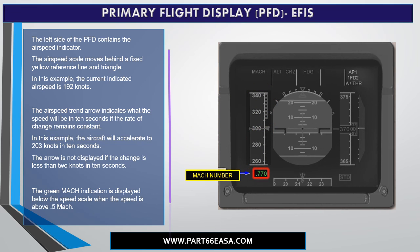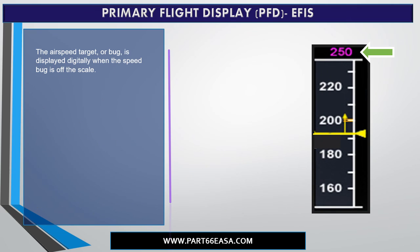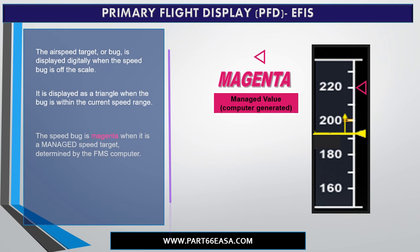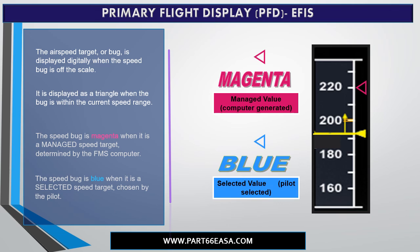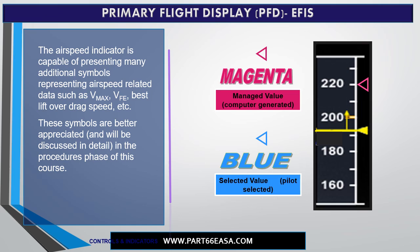The green Mach indication is displayed below the speed scale when the speed is above 0.5 Mach. The airspeed target, or bug, is displayed digitally when the speed bug is off the scale. It is displayed as a triangle when the bug is within the current speed range. The speed bug is magenta when it is a managed speed target; managed speeds are calculated by the FMS. The speed bug is blue when it is a selected speed target, chosen by the pilot. The airspeed indicator is also capable of presenting additional symbols such as VMAX, VFE, best lift-over-drag, and others, which will be discussed in the procedures phase.